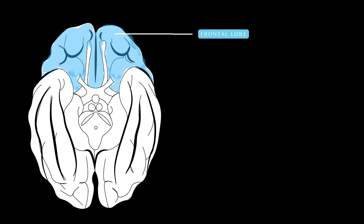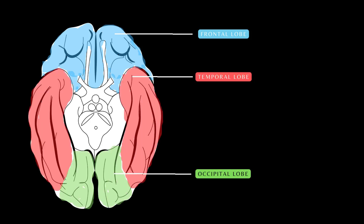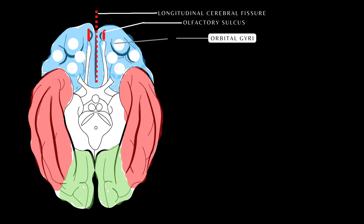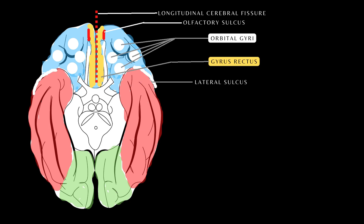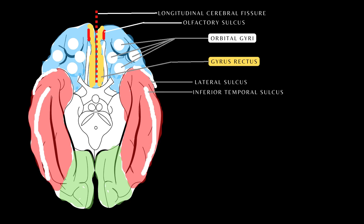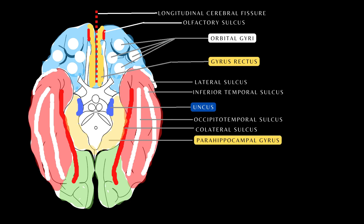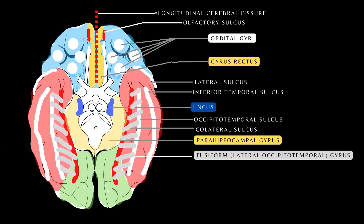On the inferior view, we see the frontal lobe, the temporal lobe, and the occipital lobe; the parietal lobe is not seen because of its position above the temporal lobe. The space between both frontal lobes is the longitudinal cerebral fissure. Other important structures include the olfactory sulcus, the orbital gyri, and the gyrus rectus. The anterior portion of the lateral sulcus delimits the frontal and temporal lobes. Structures of the inferior temporal lobe include the inferior temporal sulcus, the occipital temporal sulcus, and medially the parahippocampal gyrus and the uncus. Both occipital temporal and collateral sulci give rise to the fusiform or lateral occipital temporal gyrus.